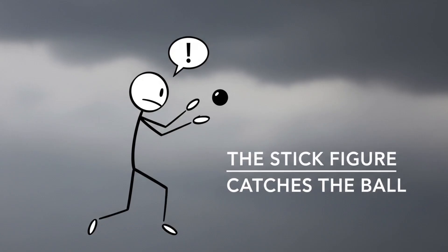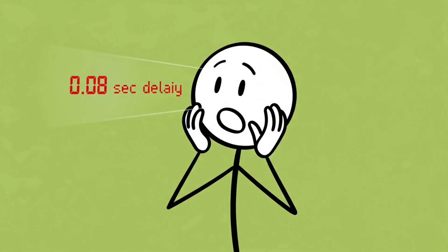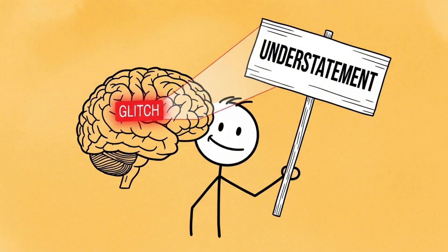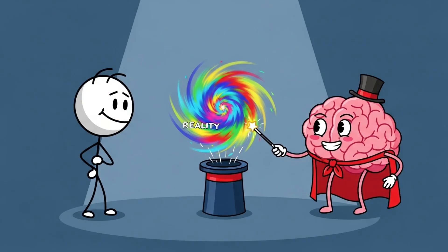So when you think you're reacting in real time, you're actually catching up to the past — like a cosmic version of closed captions. Basically, your brain's been running on a slight delay your whole life, and you didn't even notice. And the weirdest part? The only reason it works is because your brain lies about the timing of everything, constantly editing your experience so you think it's live. So yeah, your brain's not just glitchy — it's a master illusionist, keeping you blissfully unaware that you're always a step behind reality.